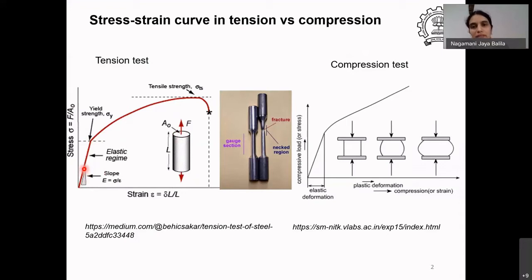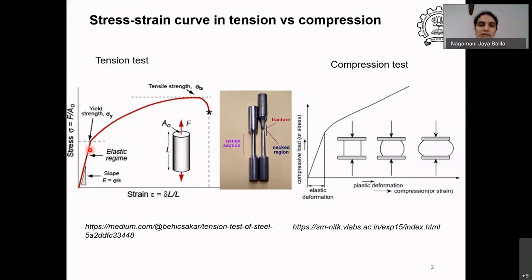This is the stress-strain curve that Professor Prita Pant was talking about, and the discussion was about the elastic regime where you measure the slope called the Young's modulus. What I will be talking about is the next point: once you reach the end of this elastic regime, you reach what is called the elastic limit — the point of no return — in the sense that if you continue to deform the material beyond this point, it undergoes a permanent deformation or change of shape.